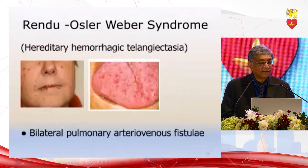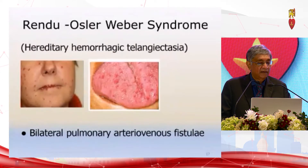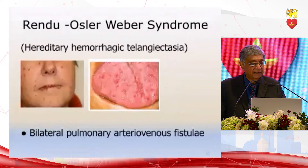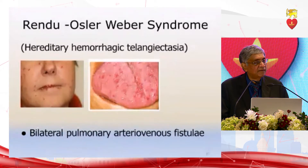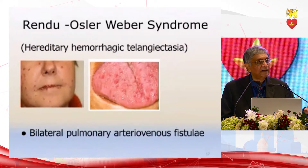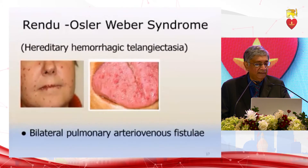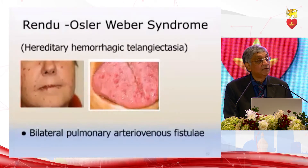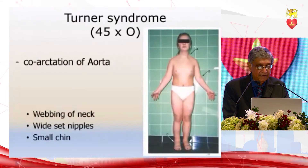When you look at the skin of the patient, you see the telangiectasia. The Rendu-Osler-Weber syndrome — hereditary hemorrhagic telangiectasia — presents with lesions on the tongue and face. It is associated with larger telangiectasia in the lung itself, giving rise to arteriovenous fistulae in the lung and bilateral pulmonary arteriovenous communications, which can later give rise to pulmonary hypertension and cyanosis.